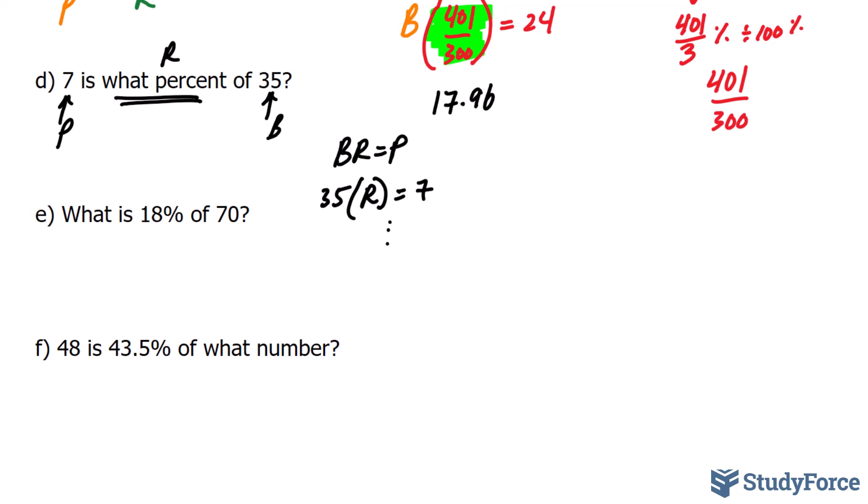For this one, they give you the percentage. So that's your R value after dividing by 100%. And this is your base value. They are seeking the portion. So you'd set it up like this. You would have 70 as your B value. Your R value would be 0.18. And by multiplying these two, you would end up with your portion.